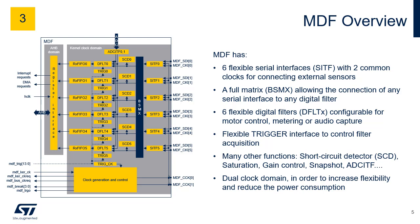MDF incorporates six flexible serial interfaces, called SITF, and two common clocks for connecting external sensors. A full digital matrix, called BSMX, allowing any serial interface to be connected to any digital filter. Six flexible digital filters, called DFLT, configurable for motor control, metering or audio capture. Two parallel interfaces for the internal ADCs — only one is used in the STM32U5 to interconnect ADC1 to MDF. Flexible trigger interface to control filter acquisition, and many other functions.